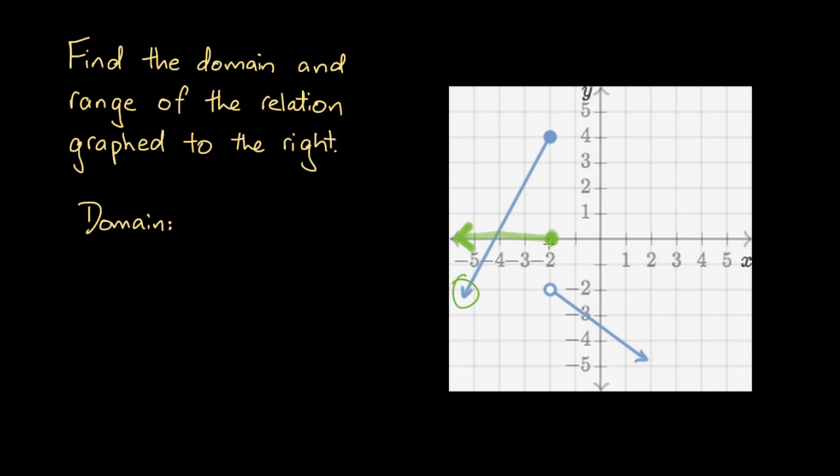This indicates that all x values less than or equal to minus 2 are defined for this relation. Thus, all these x values are possible inputs.